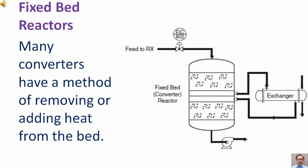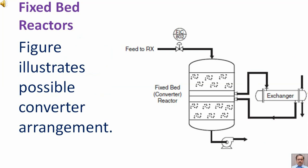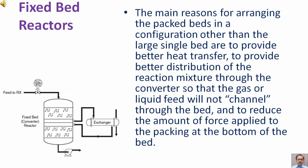Many converters have a method of removing or adding heat from the bed. Configurations other than a single large bed are used to provide better heat transfer, to provide better distribution of the reaction mixture through the converter so that the gas or liquid feed will not channel through the bed, and to reduce the amount of force applied to the packing at the bottom of the bed.